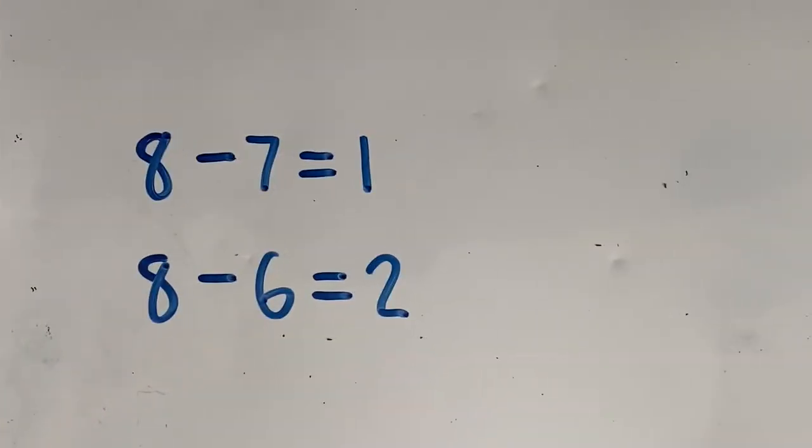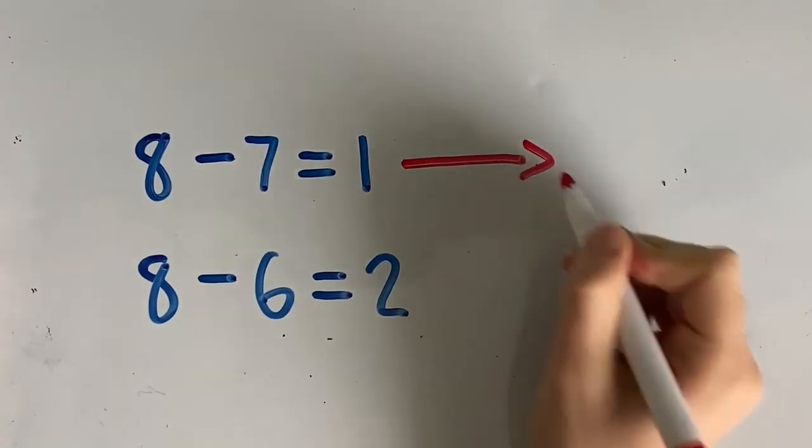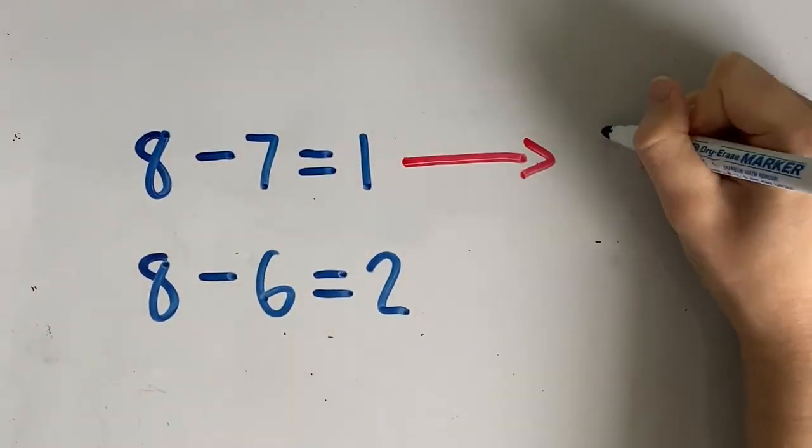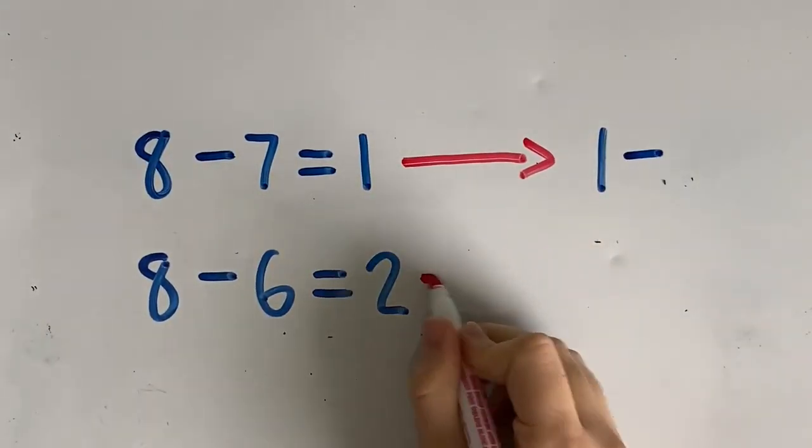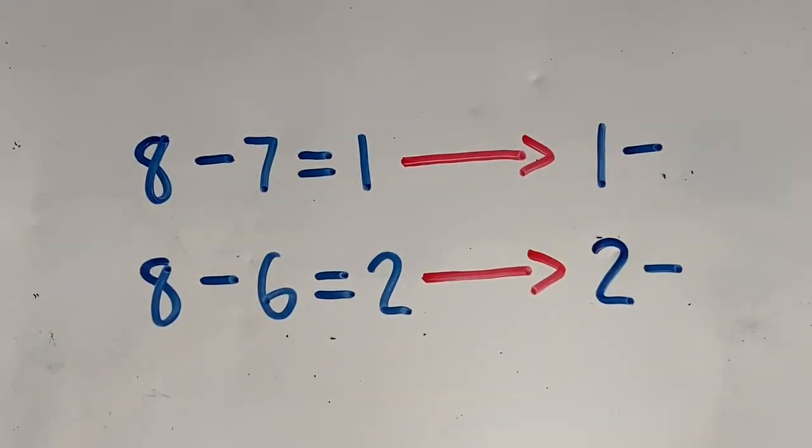To know the charges of the elements in group 15 and on, we need to understand that they are anions, so they gain electrons to complete a valence shell that requires eight electrons. If an element is in group 17, eight minus seven is one, so it will have a charge of negative one, meaning it will gain one electron. If it is in group 16, eight minus six is two, so it will have a charge of negative two, meaning it needs two electrons to complete its valence shell.